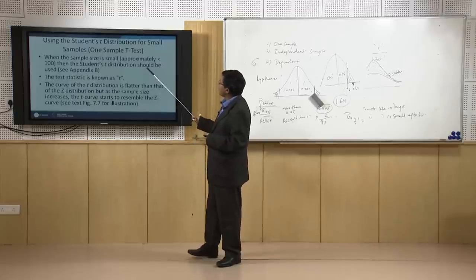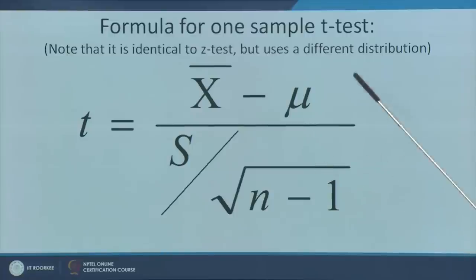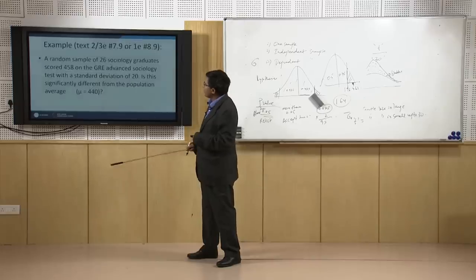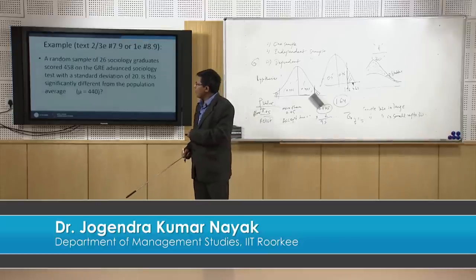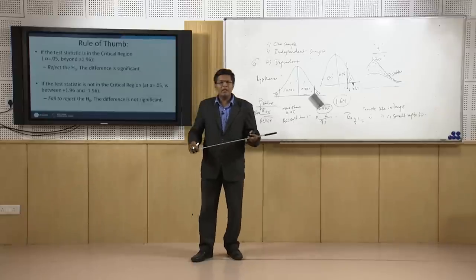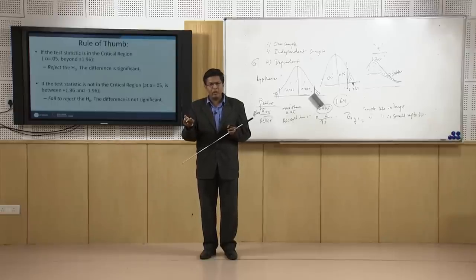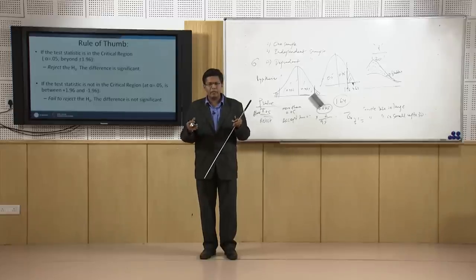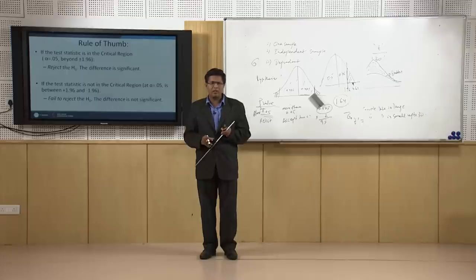The Student's T-distribution for small samples uses a similar formula — when you do not have the population standard deviation, you substitute the sample standard deviation. We have covered the one-sample case here. In the next session we will finalize Z and T, and move on to a third scenario with more than two samples, including the two-sample and paired-sample T-tests. Thank you for this session.